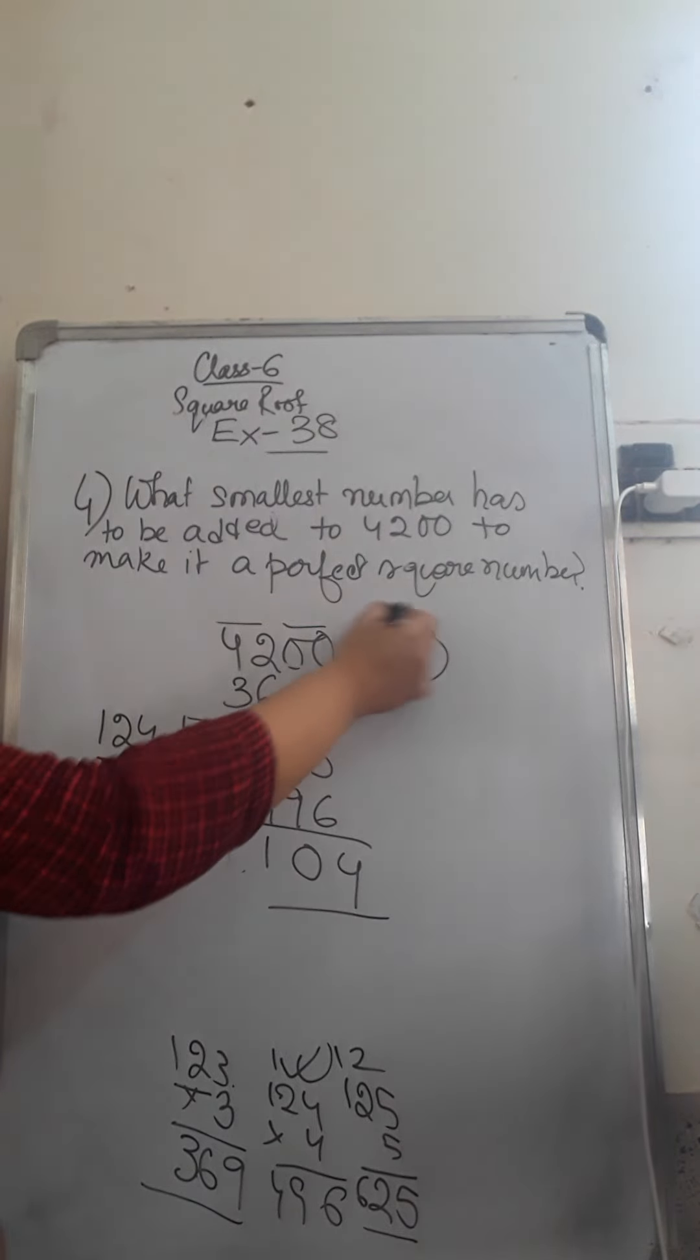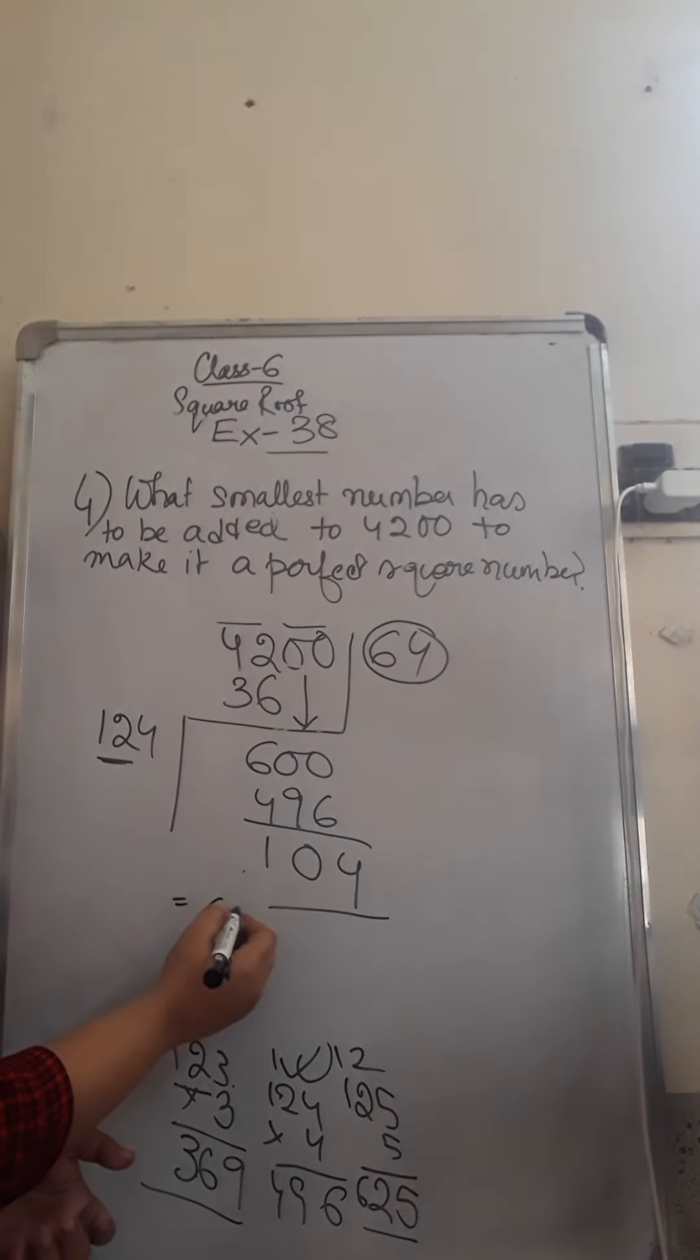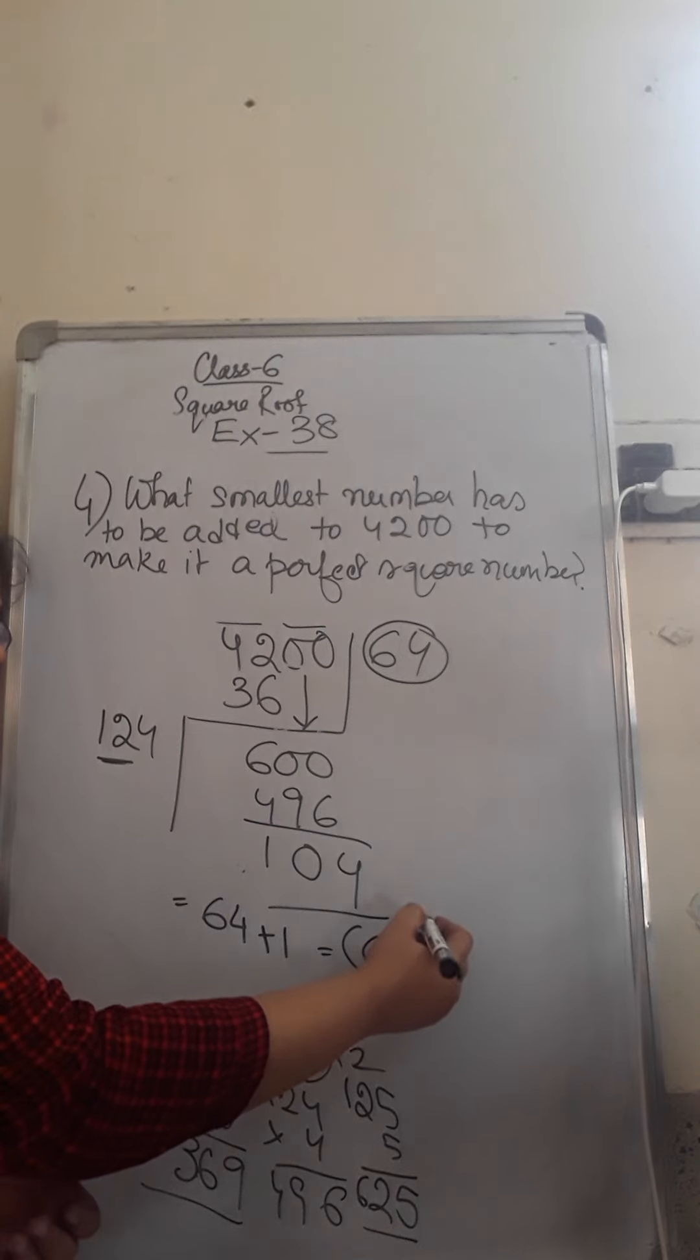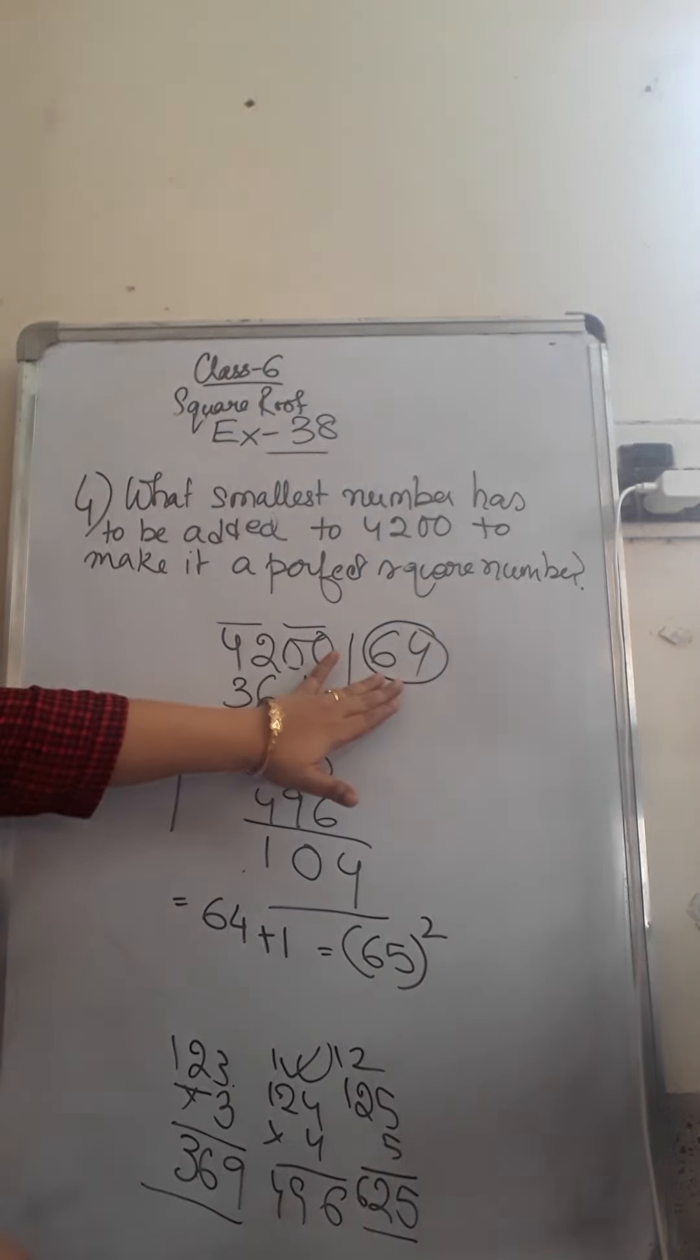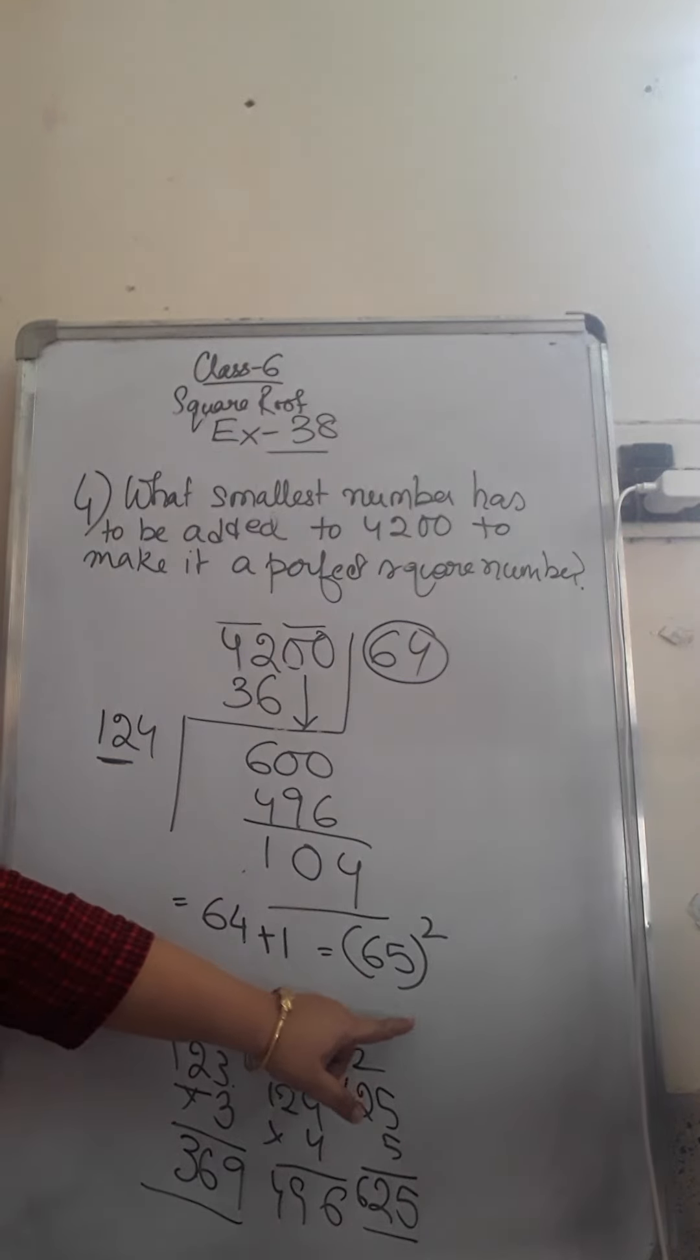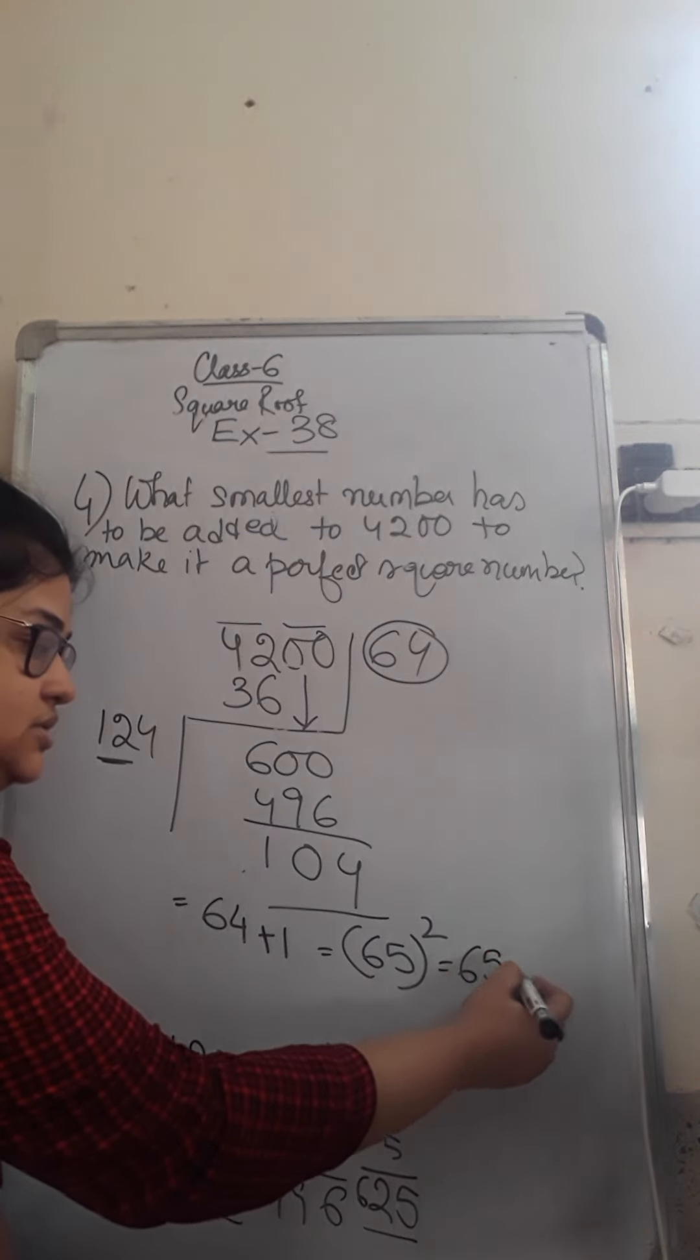Whatever is the quotient, you have to take. So here the quotient is 64. You have to add 1 to that, so it is 65. And you have to take its whole square. Whole square means multiply 2 times. So the quotient plus 1, that is the next number, 65, whose whole square you need to find out. That means 65 into 65.